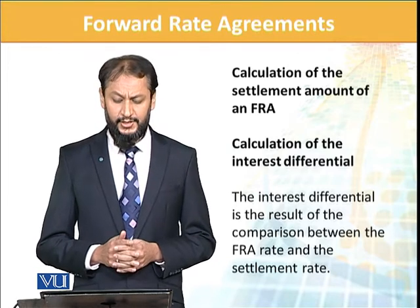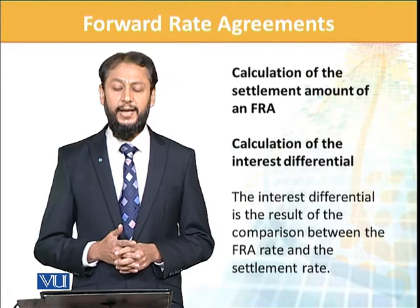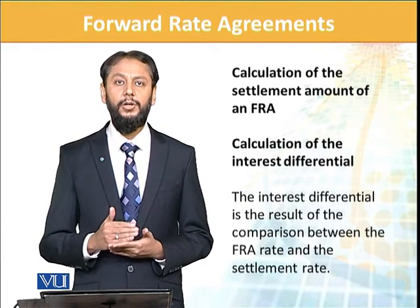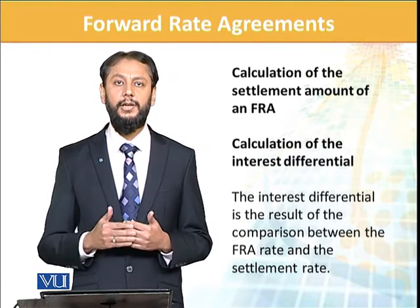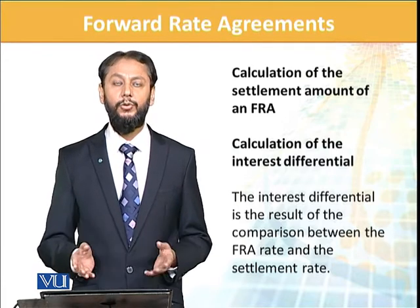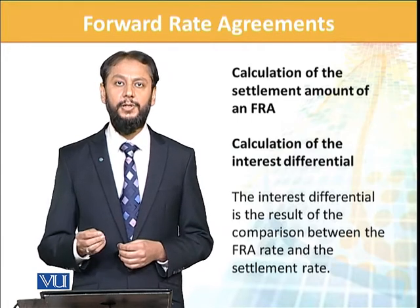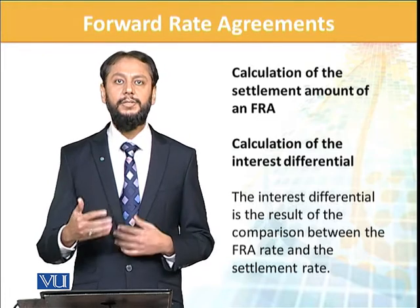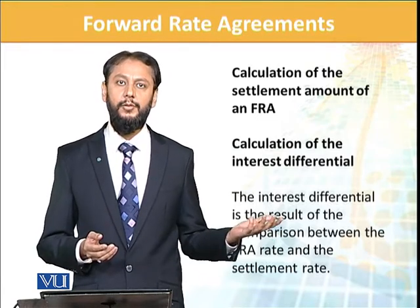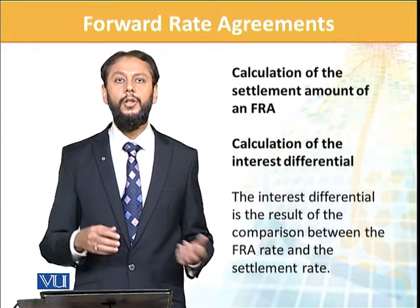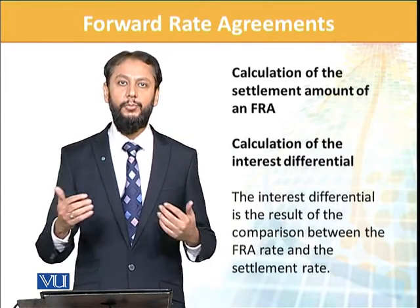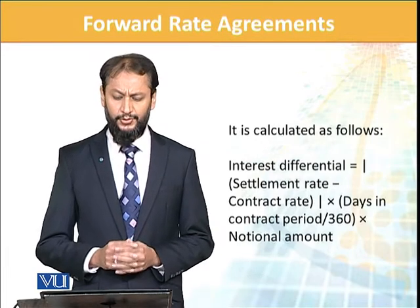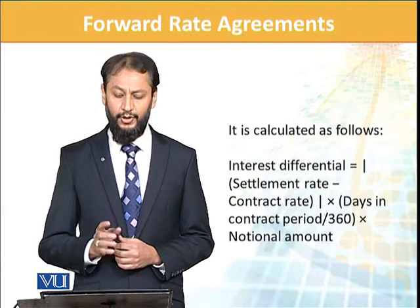Interest differential is the result of a comparison between the FRA rate and the settlement rate. Basically آپ نے جس rate پہ lock کیا ہے اور اس وقت rate کیا ہے — اس سے آپ کی settlement rate کے ساتھ gain ہوگا۔ For example, آپ نے lock کر لیا 6% پہ اور اس وقت rate بڑھ گیا یا کم ہو گیا — تو آپ کی settlement کیسے ہوگی؟ آپ market سے current rate پہ borrow کریں گے اور FRA کی settlement آپ کو net effective rate پہ لے آئے گی۔ It is calculated as: Interest difference = (settlement rate minus contract rate) × days in contract period.